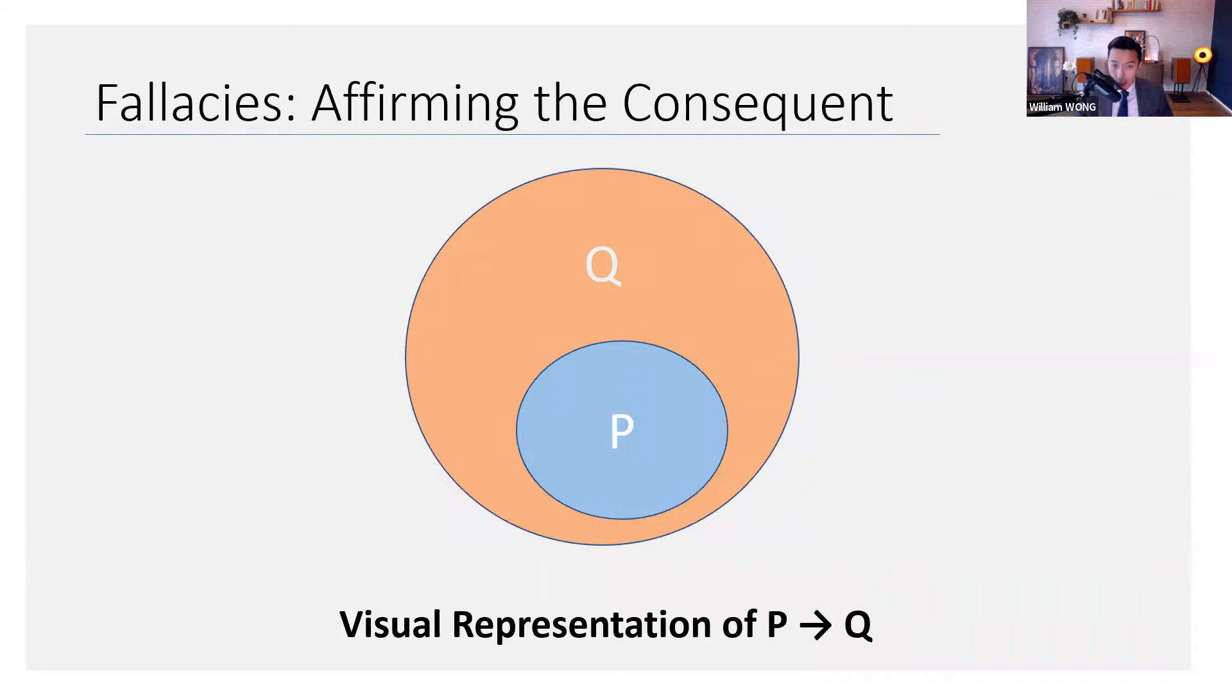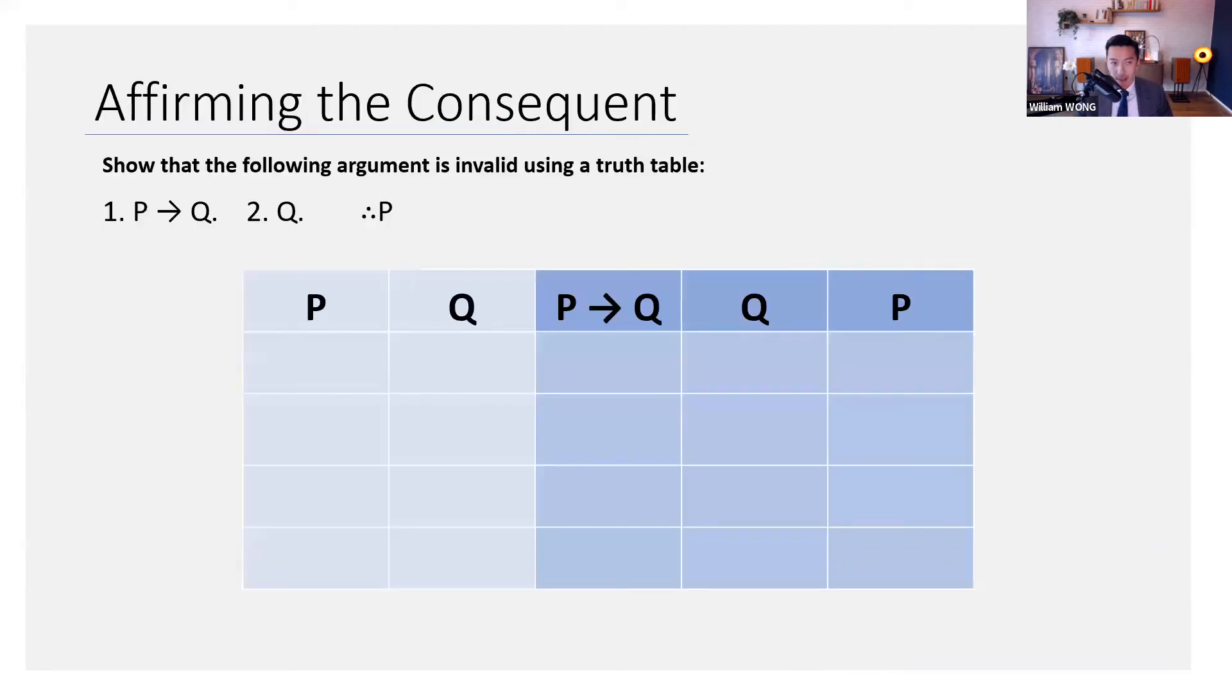Here's a visual representation of the fallacy. Again, P entails Q is noted by something like this, and you're affirming the consequent, so you're saying Q. This is super easy to see, because when you say Q, what you're saying is you're within the big orange circle. But what that means is you can be found here, you can be found here. And perhaps you could be found inside the P circle as well. But just on the basis of your two premises, you don't know where you stand.